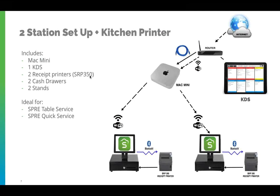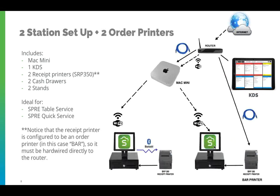Once it's connected, here are some examples of what it looks like within the system. No matter if you have one, two, or more stations, a Mac Mini is required. The Mac Mini acts as a local server so information is passed in faster real-time from your station to the KDS unit. In a more complex design, you might have two stations with one printer serving as both a receipt printer and a bar printer, while the KDS remains the kitchen unit.